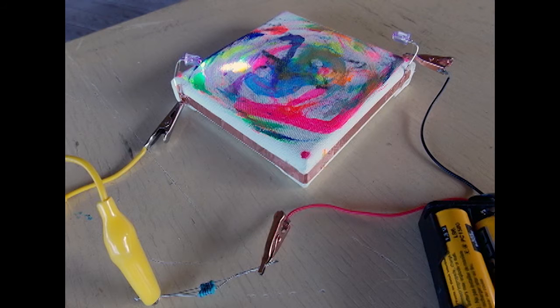So the positive side of the circuit copper foil runs down two sides of the canvas and the copper foil runs down the negative side of the circuit on the other two sides of the canvas.